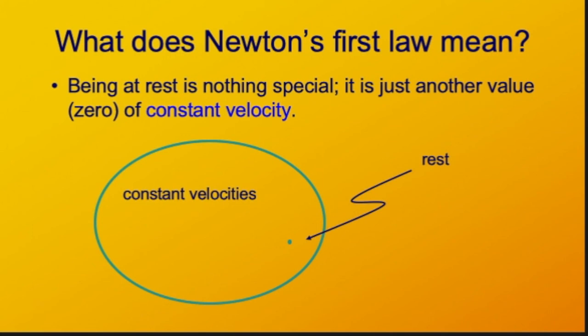What Newton's first law has done for us is remove the distinction between motion and non-motion. A constant velocity motion is nothing different, really, conceptually, than zero velocity motion. Zero velocity is just a special case of all velocities, just one specific case. There are a whole infinity of possible constant velocities, and being at rest is just one of them. That's Newton's first law.